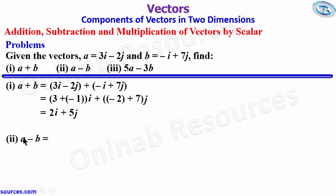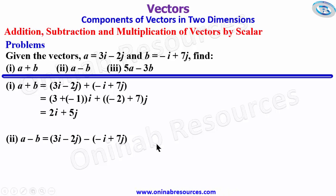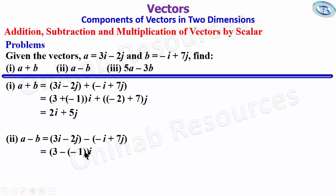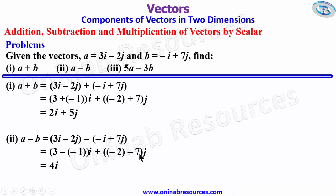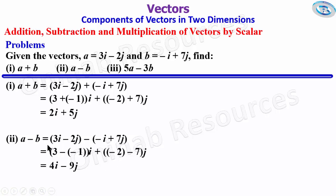For a - b, we collect the like terms: (3 - (-1))i + (-2 - 7)j. So 3 - (-1) = 3 + 1 = 4i, and -2 - 7 = -9j. The result of subtracting b from a is 4i - 9j.